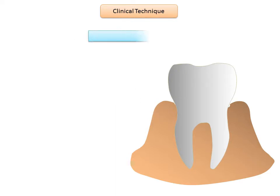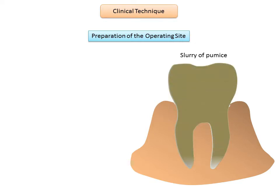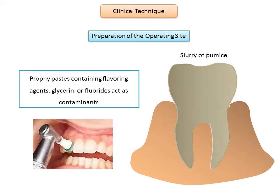The next step is preparation of the operating site. Prior to beginning any composite restoration, it may be necessary to clean the operating site with a slurry of pumice to remove black biofilm and superficial stains, creating a clean operative site more receptive to bonding. Prophylactic paste containing flavoring agents, glycerine, or fluoride should be avoided as they may interfere with acid etching and compromise the adhesive procedure.